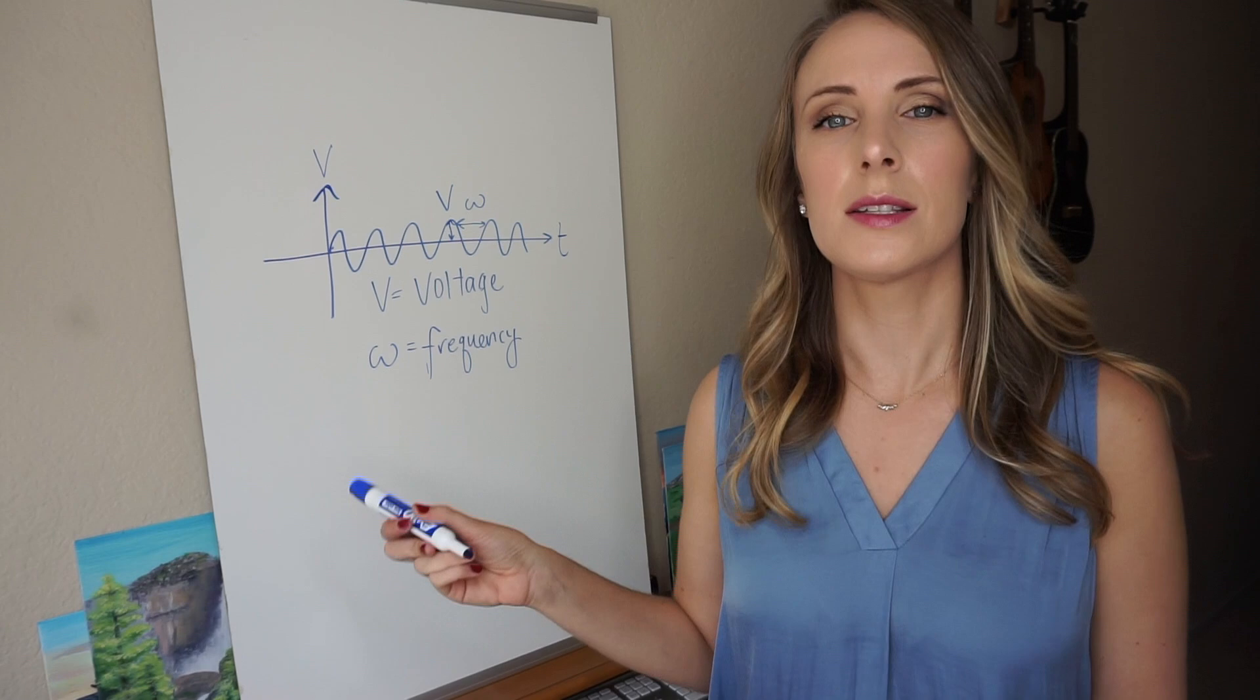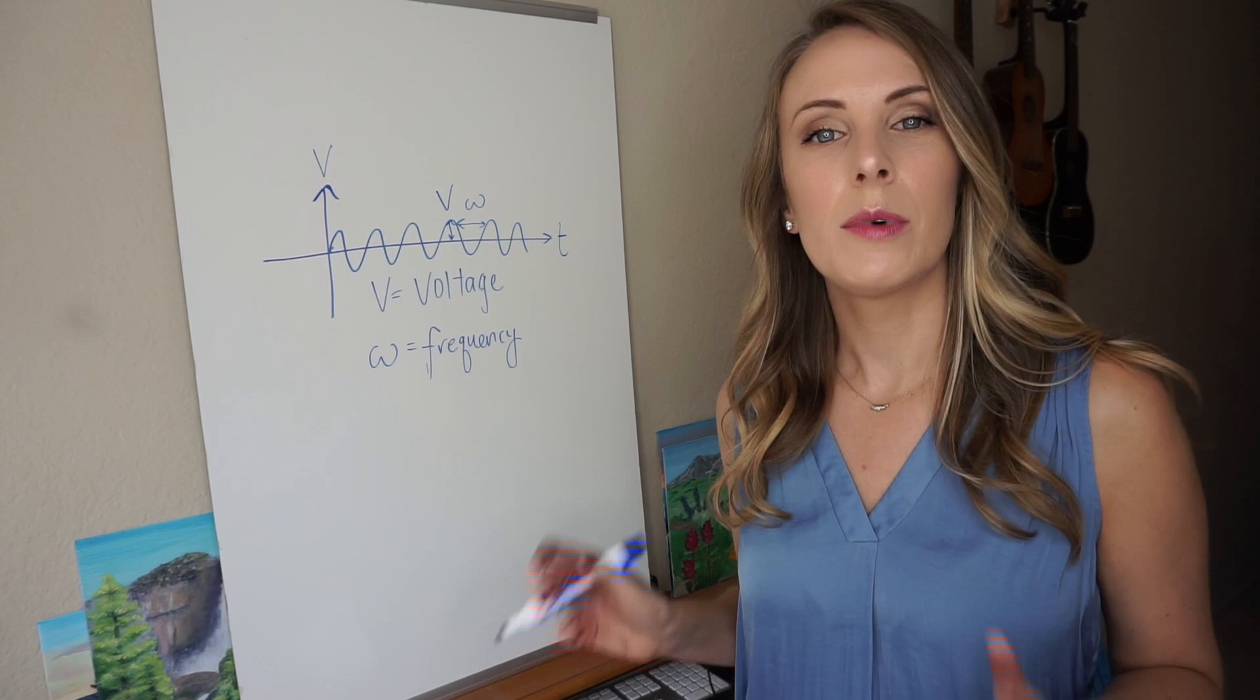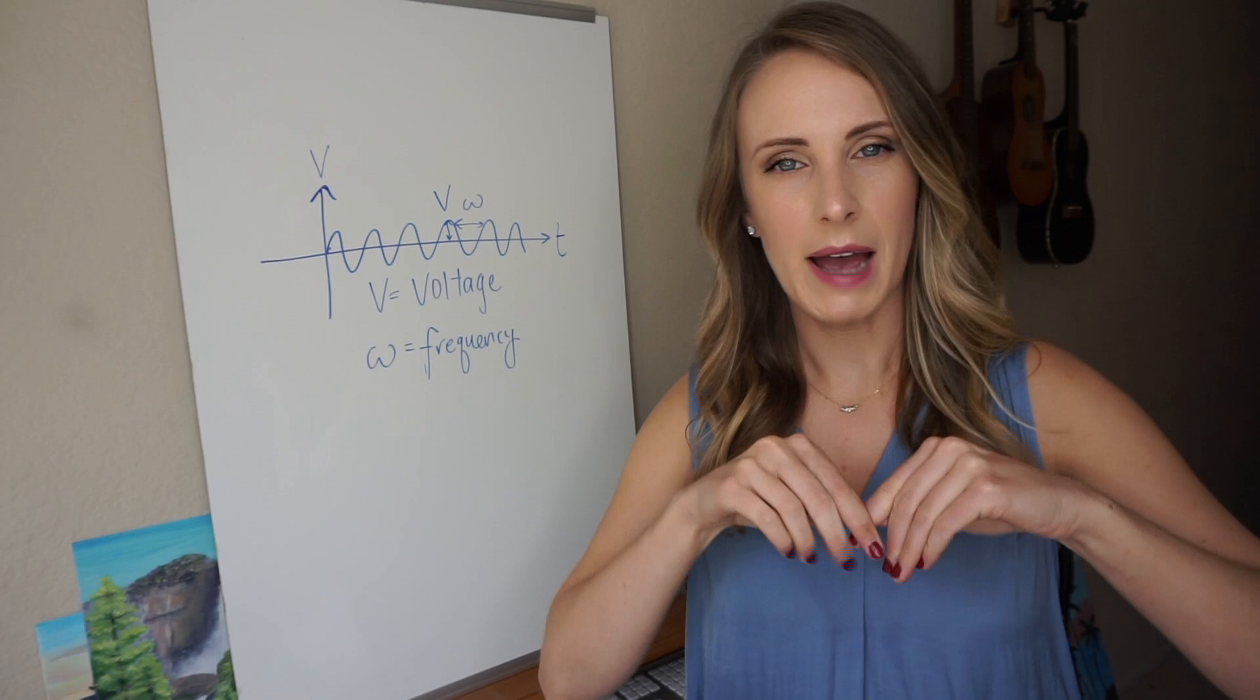During EIS, we keep the voltage constant, typically around 5 to 10 millivolts, just a tiny signal. And what we change, the variable we change, is the frequency.